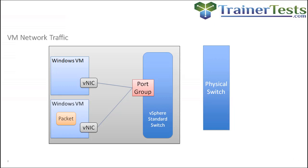Now some traffic needs to flow out to an external network device, or if a virtual machine is on a different network, it'll have to be sent to the physical network using something called a VMNIC. A VMNIC is a physical uplink — this is one of the physical ports on the ESXi host and it acts as an uplink for the virtual switch.